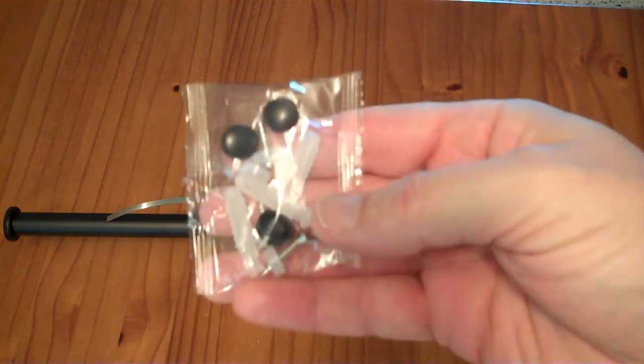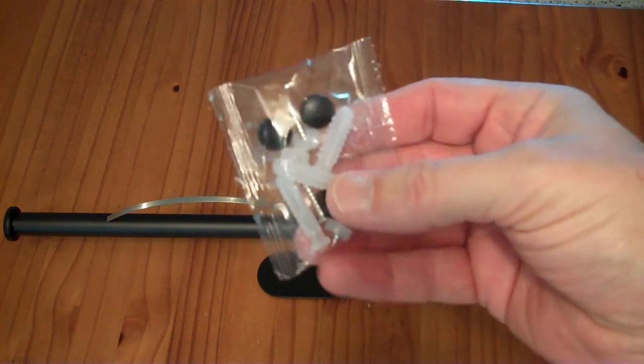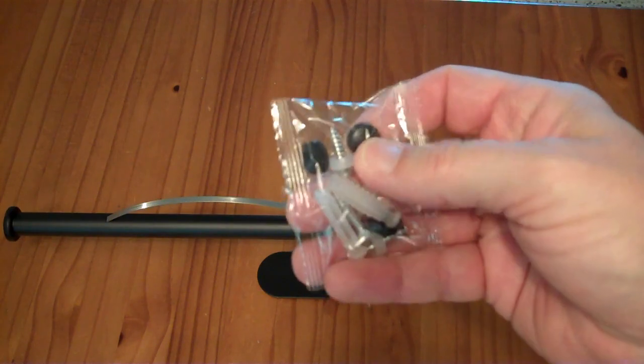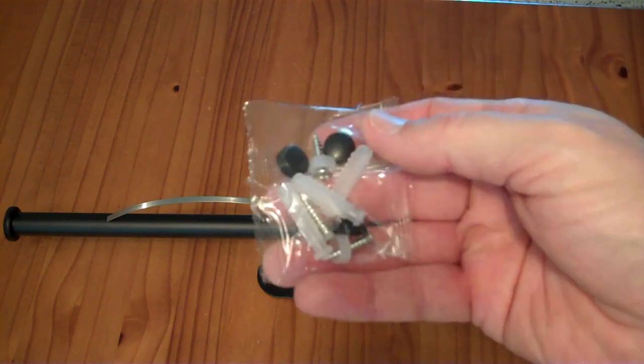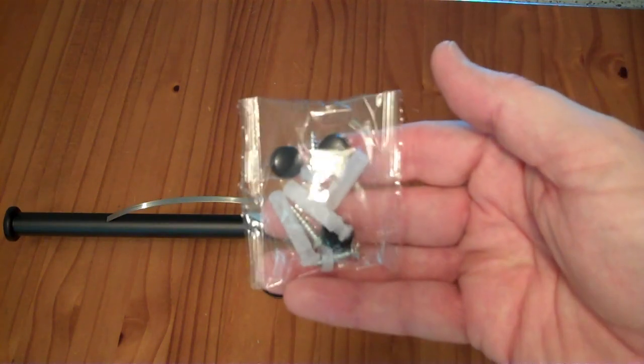So there's only two holes, but they give you three screws, three drywall anchors, three little cap holders, and three caps. So you can lose one of each of these and still be okay.